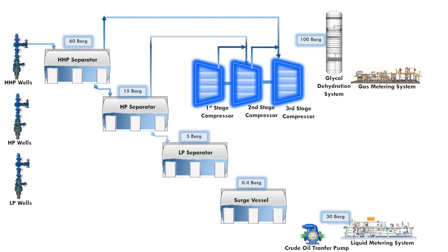The liquid of the HP separator will enter the inlet of the low pressure separator, or simply known as the LP separator. The pressure is reduced using a pressure control valve at the top of the LP separator. The gas discharged from the top of the LP separator will enter the inlet of the first stage compressor.